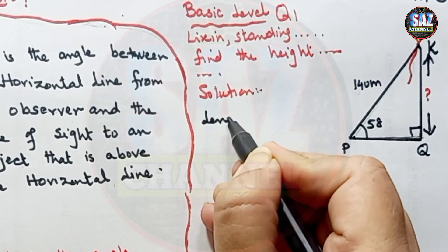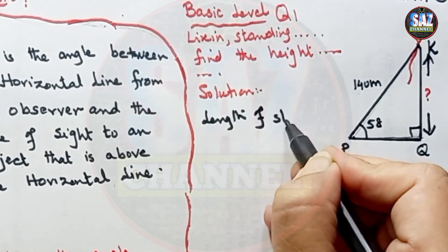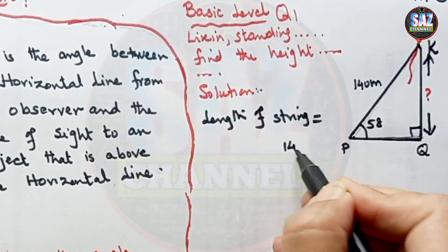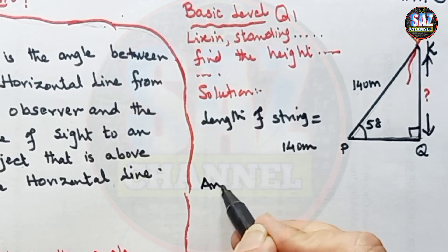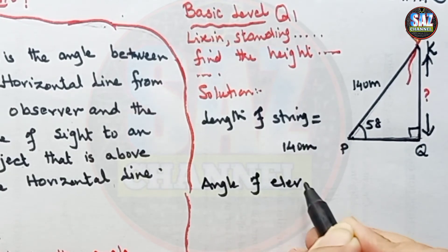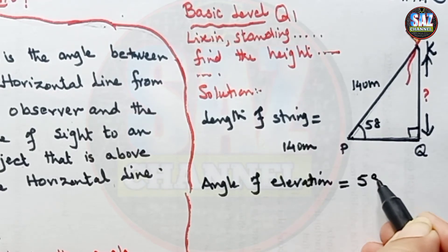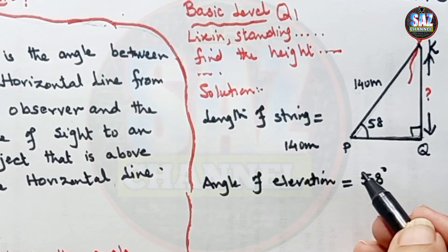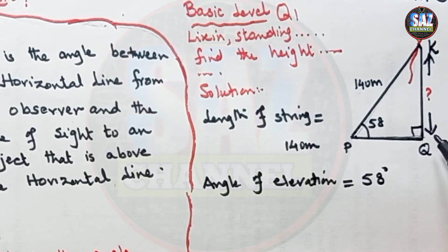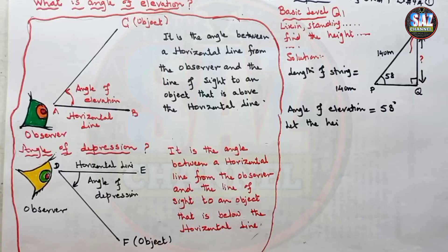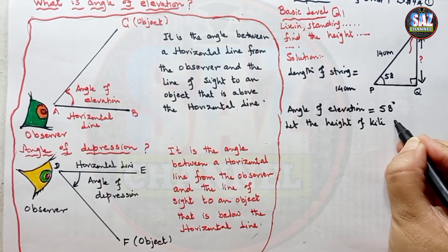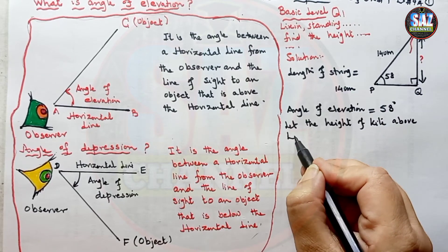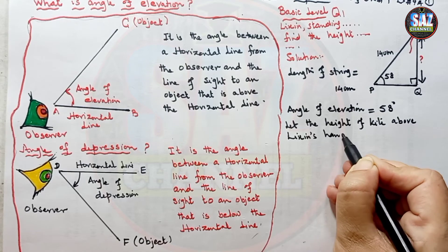It is really important to support your working with small statements. The length of string equals 140 meters, and the angle of elevation given in the question equals 58 degrees. We have to find the height of the kite above her hand. This is the position of Lixin's hand, so we have to find the height of the kite above Lixin's hand — let that height be H.